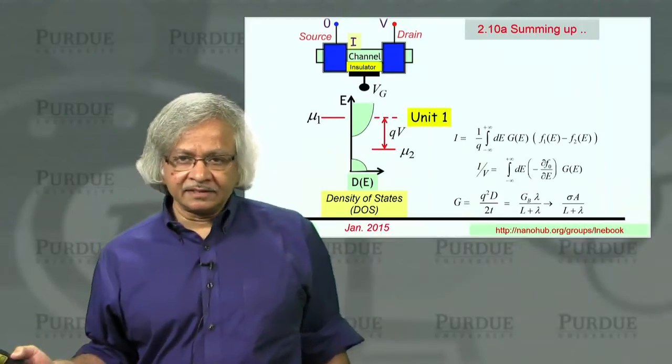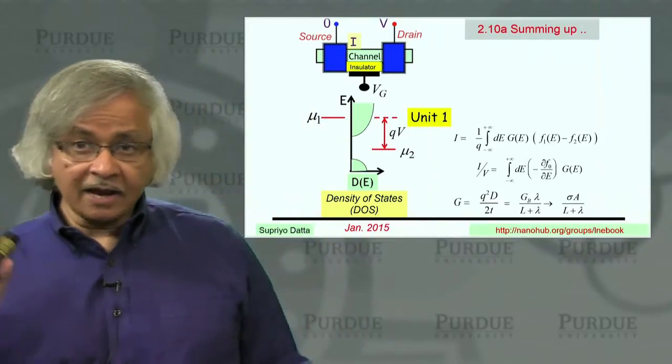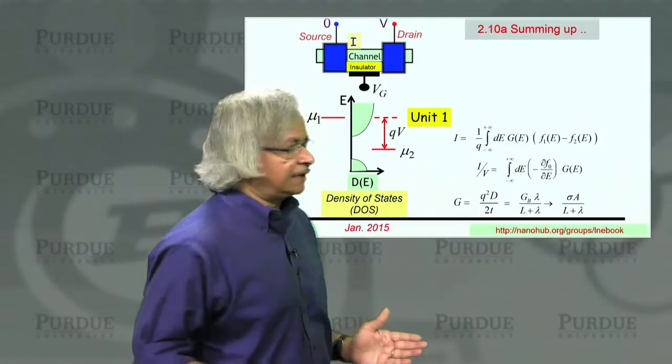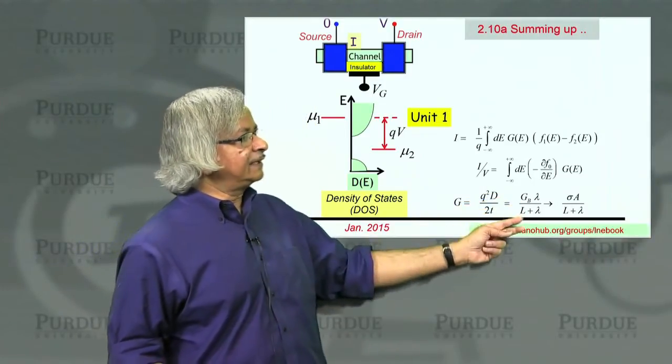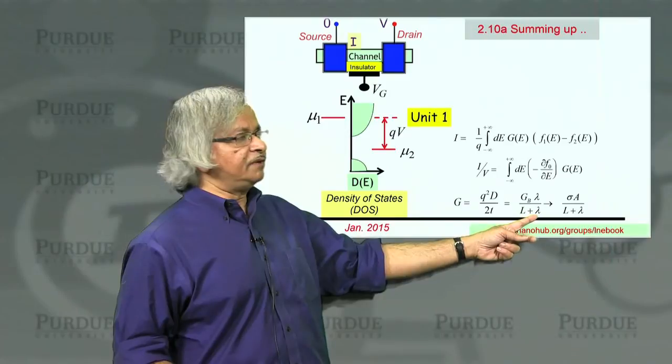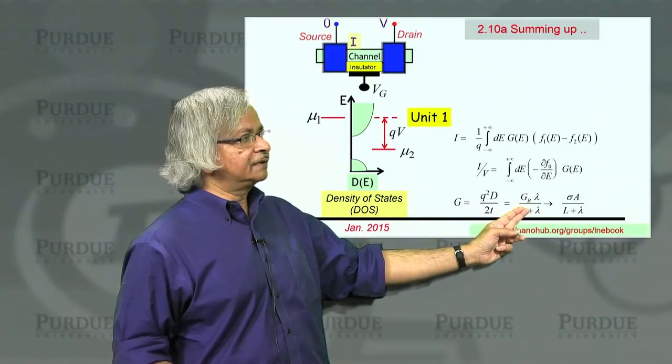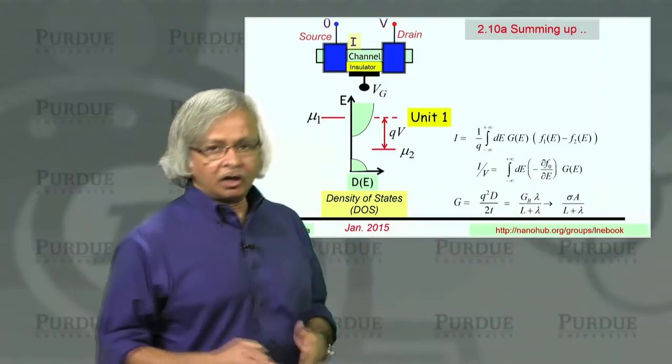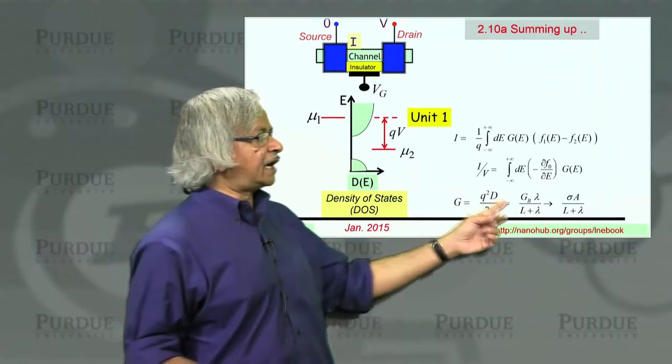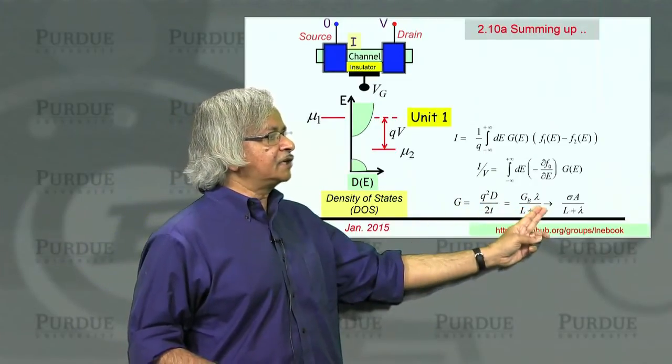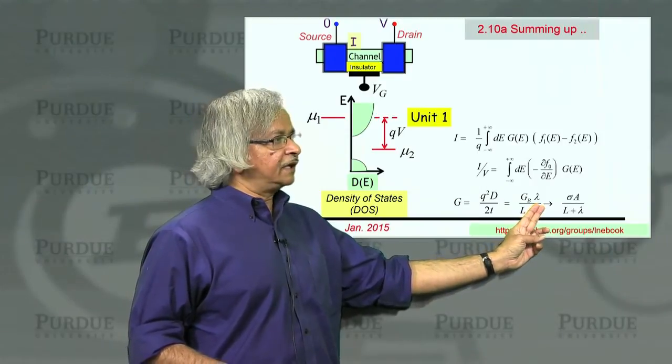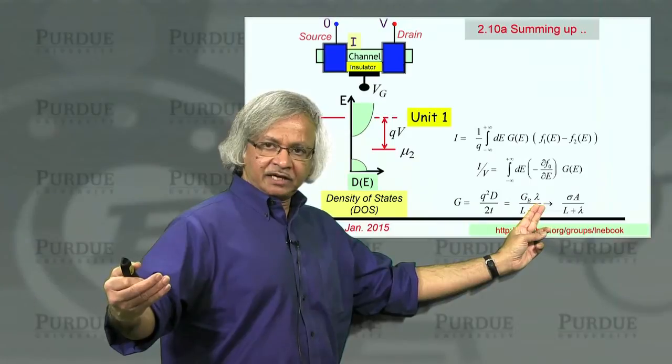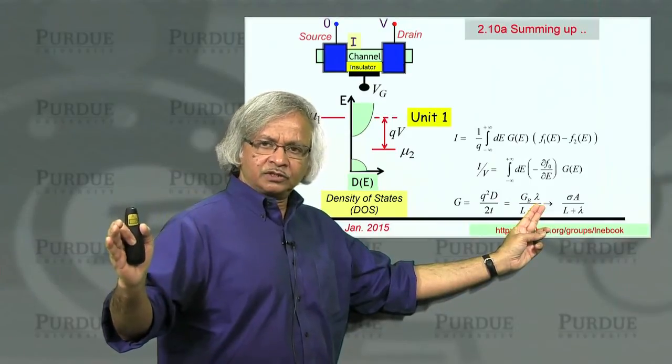We then showed that you could start from here and get a general expression for the conductance that actually applies in both ballistic and diffusive limits. If you had a ballistic conductor, that means the length is very small compared to a mean free path, so you drop that. And then you have the ballistic conductance. If you had a long device, then the length is large compared to a mean free path, and so you drop the mean free path. Then you have a conductance that goes down with length of the channel, just as Ohm's law requires.